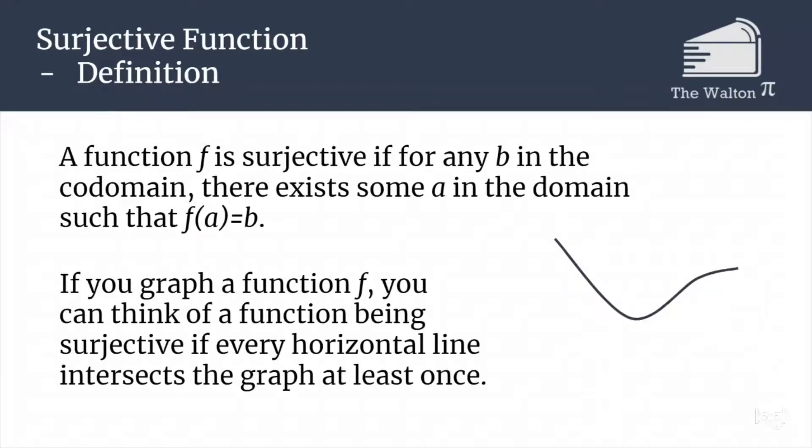This graph, however, is not surjective because we can draw a horizontal line that does not intersect the graph. There are some values in our codomain that are never mapped to by our function.